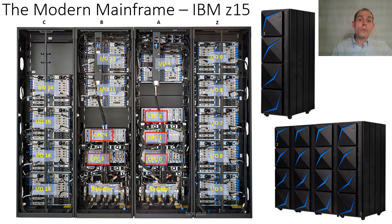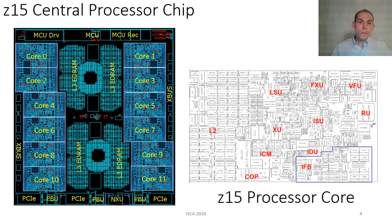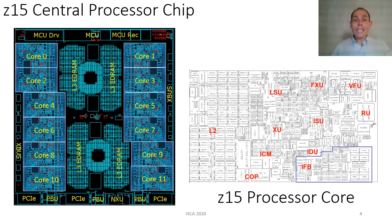Up to five water-cooled central processing complexes, known as CPCs, contain up to 40 terabytes of DRAM main memory. Within each CPC resides four central processing chips that contain the processor core. There are 12 processor cores on one CP chip built in 14 nanometer technology. Each core has a private Level 1 and Level 2 split instruction and data cache. Shared Level 3 eDRAM cache occupies the center, with cross-chip communication, memory, and I/O modules at the edges. There are over 9 billion transistors and over 15 miles of wire on a single CP chip.